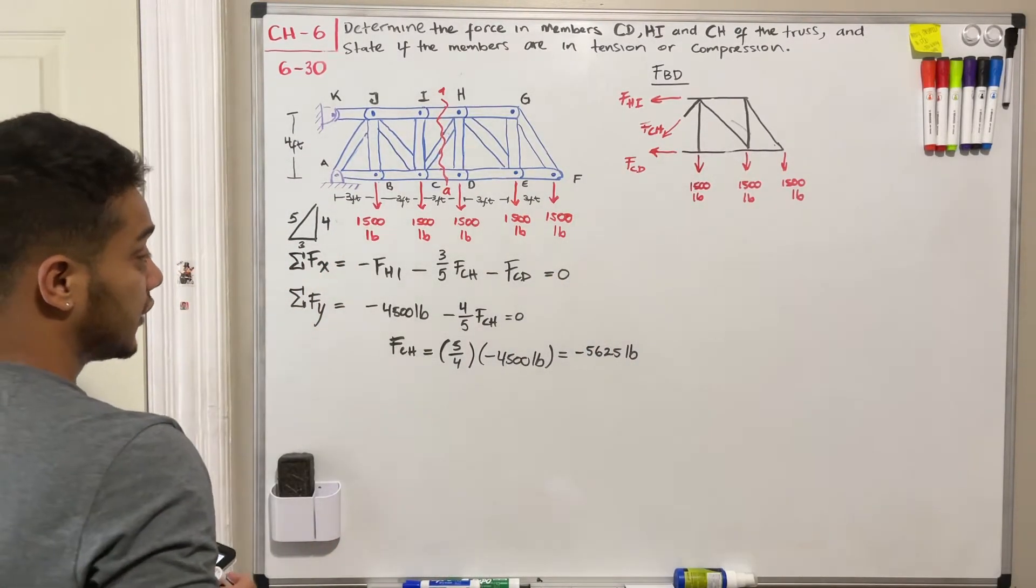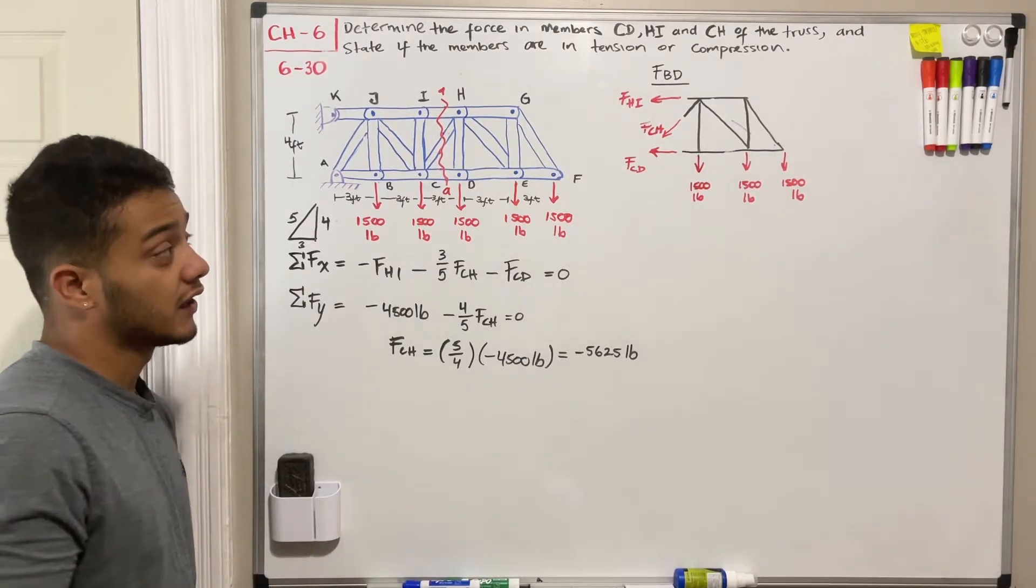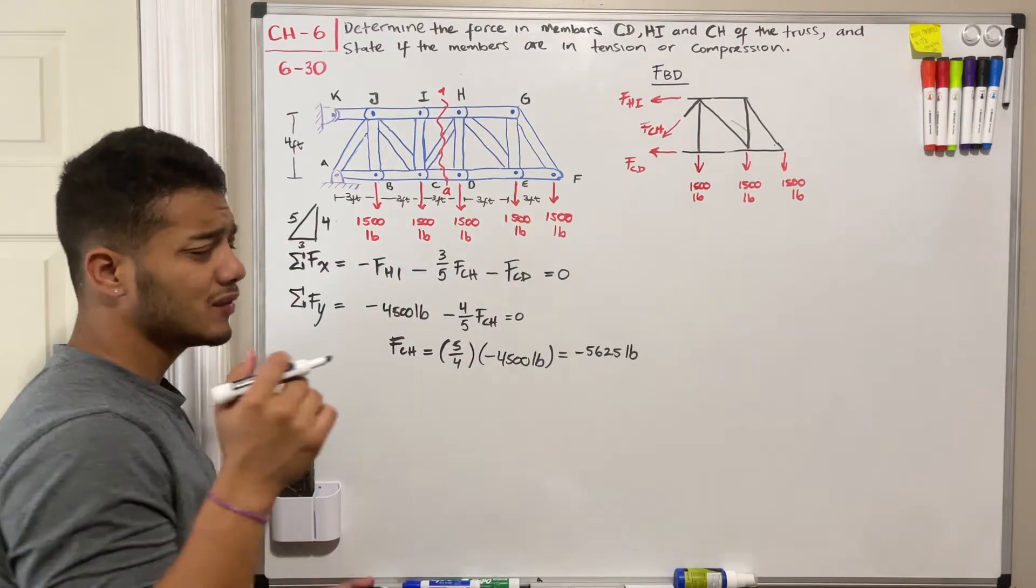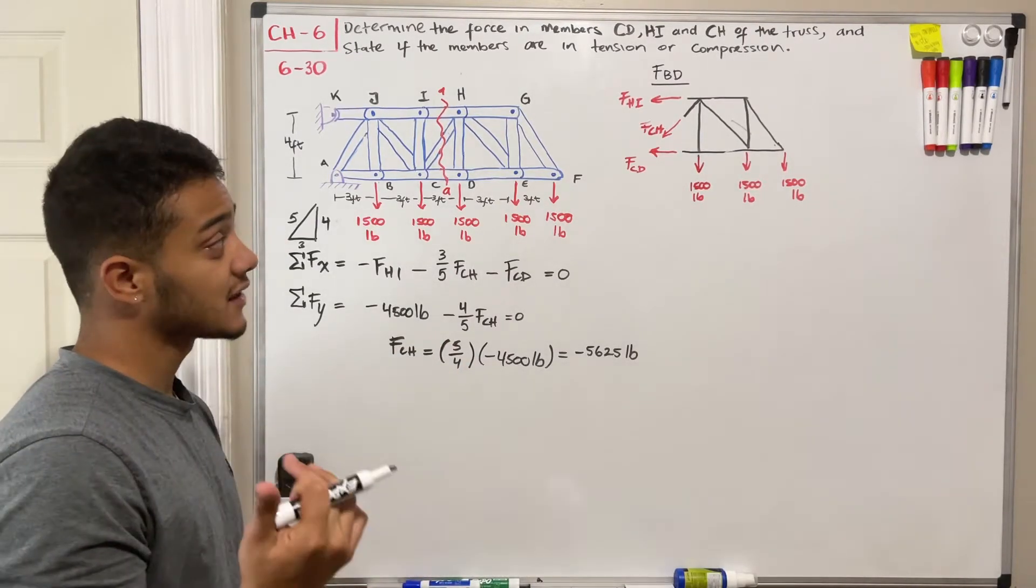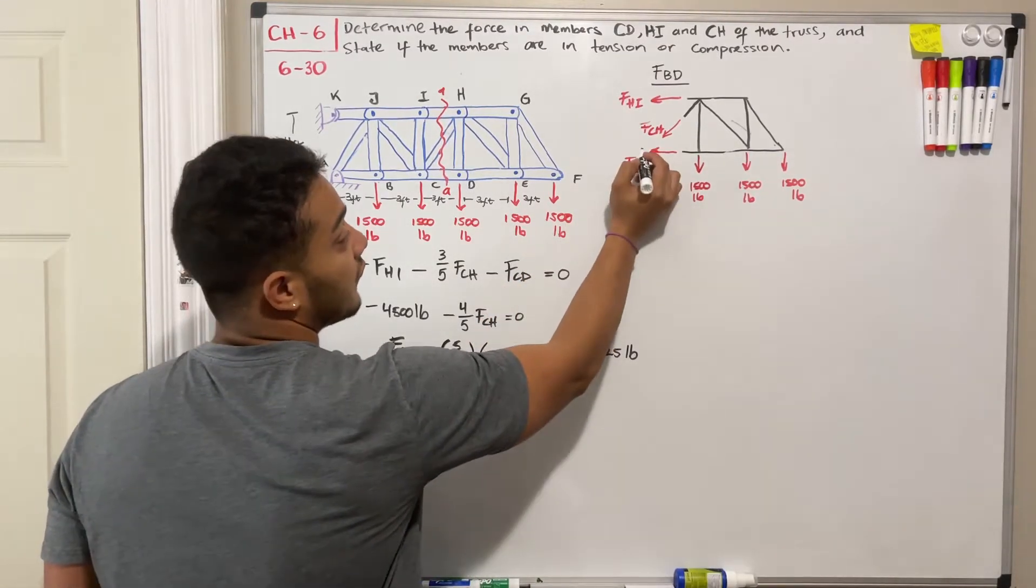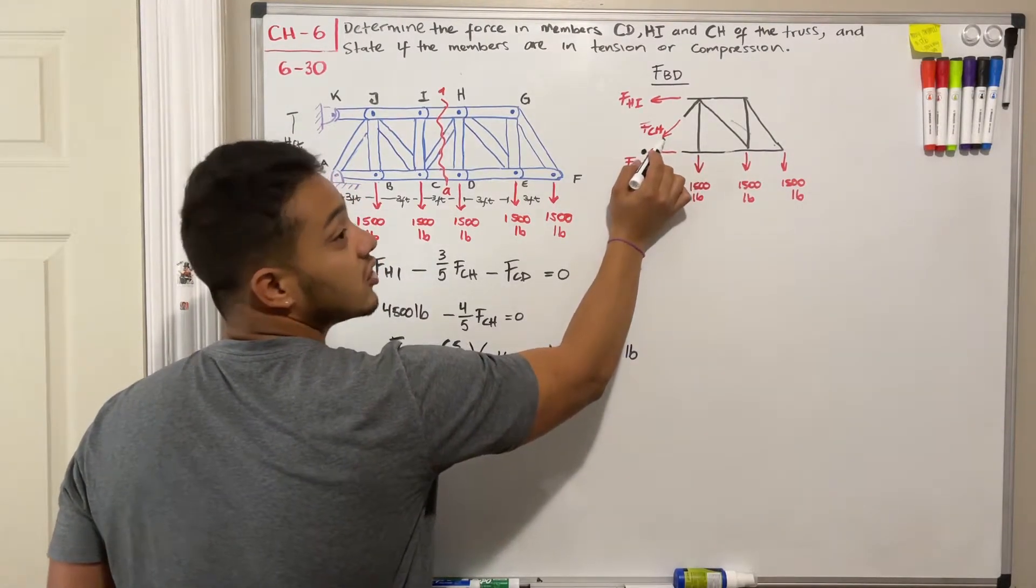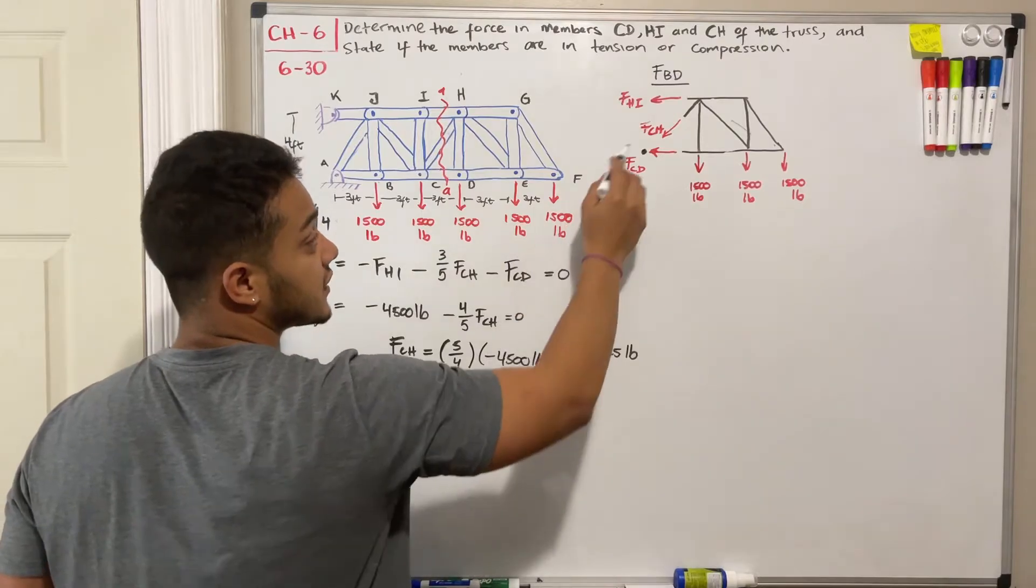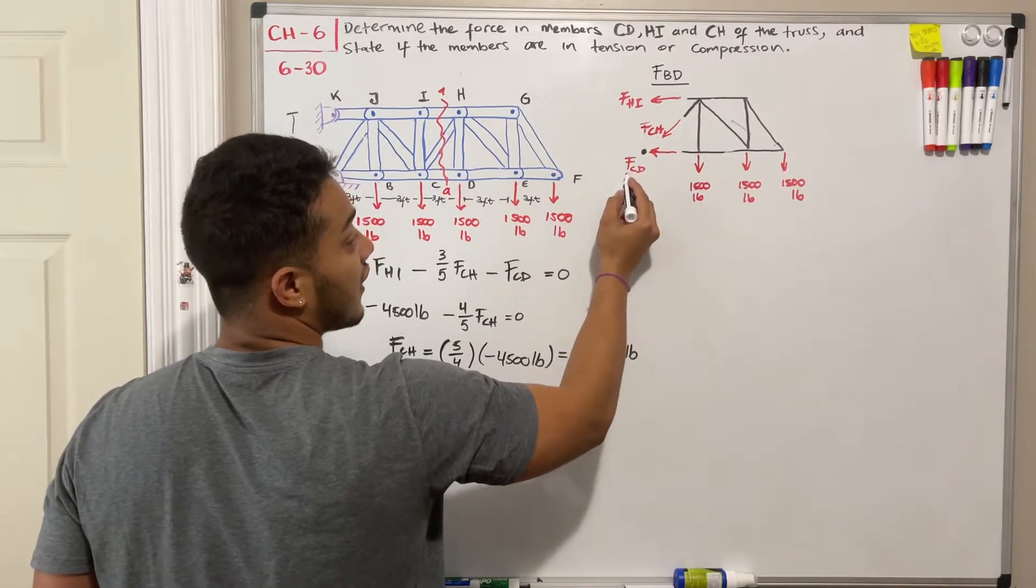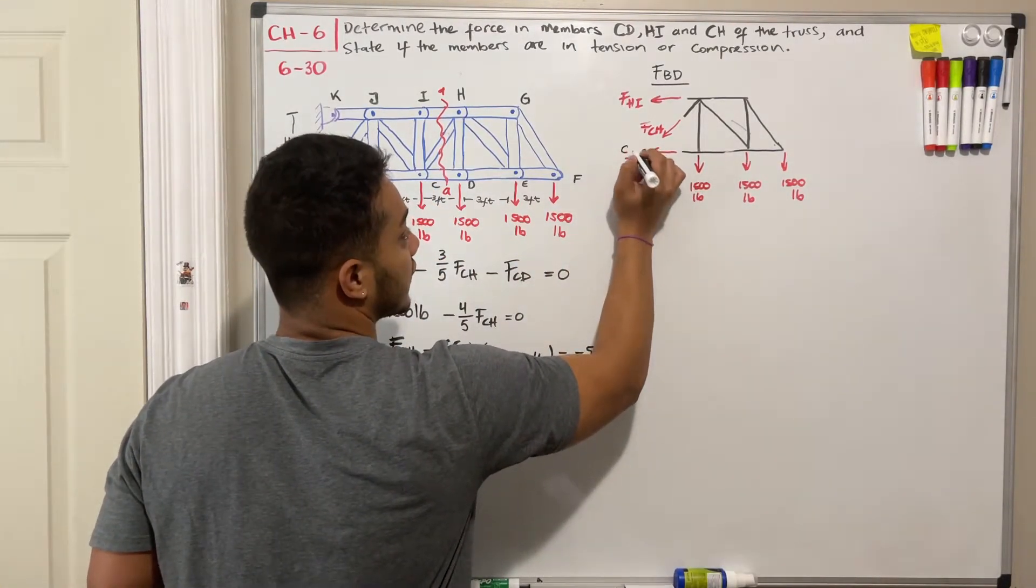Okay. Last, we can do is a summation of moments with respect to a point. Now, which point do we pick? So as you may know, the point that we're going to pick is the one that cancels the biggest amount of unknowns that we have. So in my case, I want to put it at my point C, this point here, because my force CH doesn't have distance with respect to that point C, and also my FCD. So this point over here. So this is my point C.